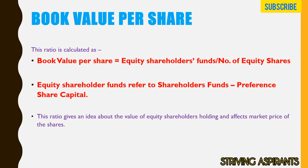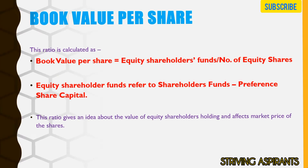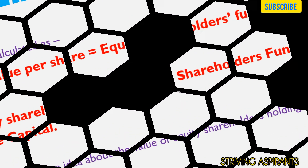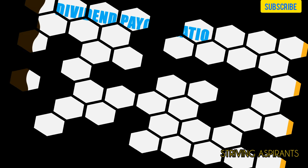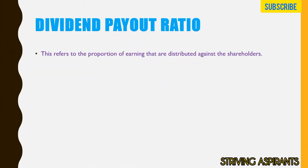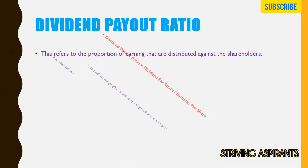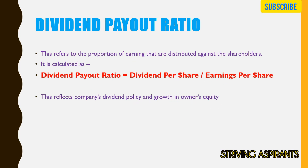Next is the Dividend Payout Ratio. The calculation is: Dividend Per Share divided by Earnings Per Share. This reflects the company's dividend policy and growth in owners' equity.